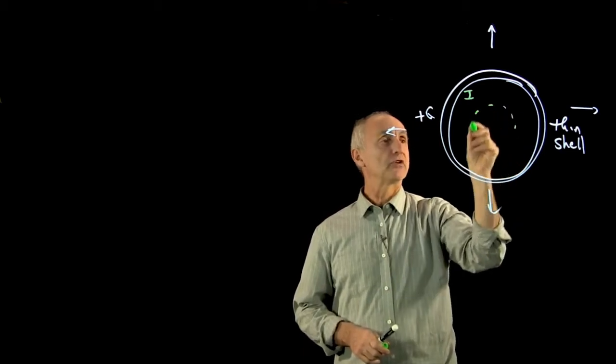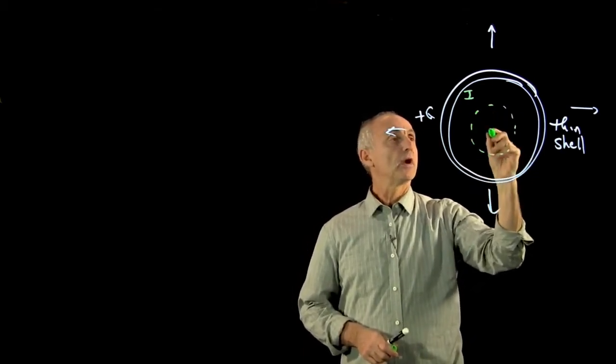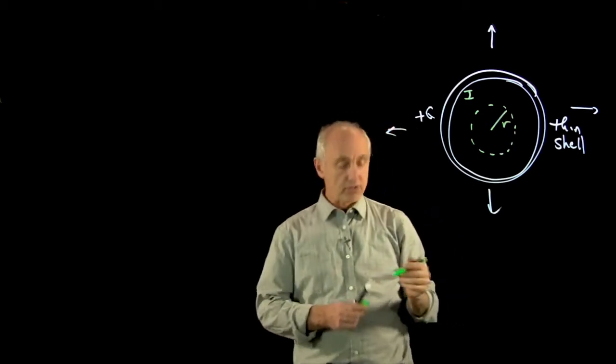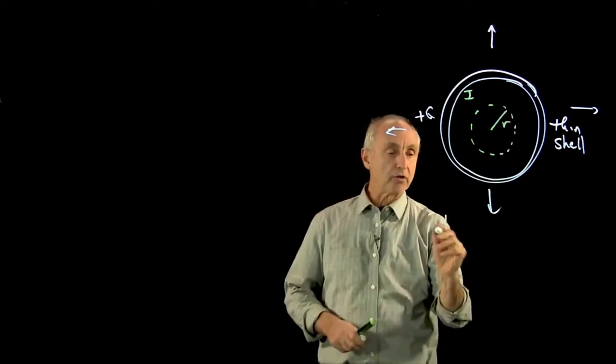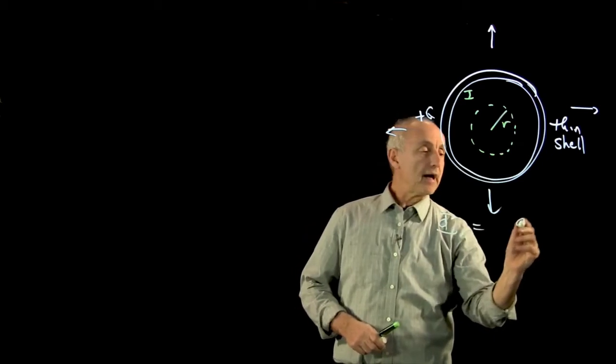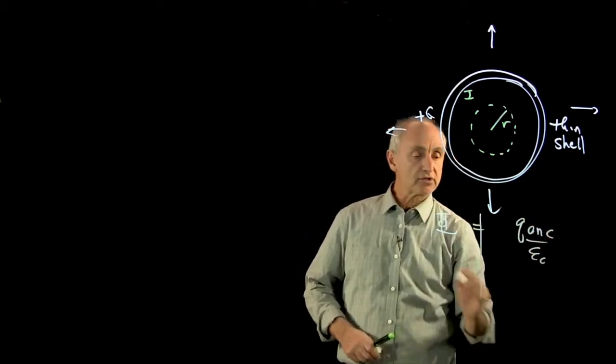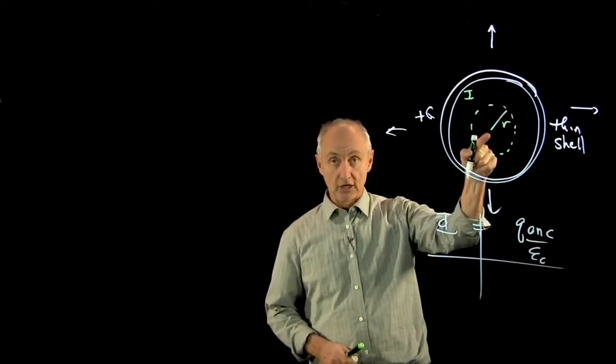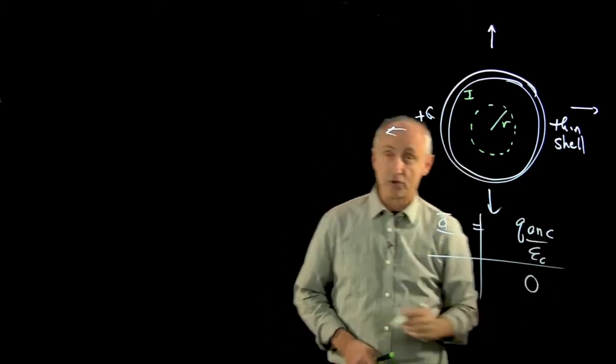So here, let's choose a Gaussian surface where radius r. Now, what we know is when we apply Gauss's law, that the electric flux is equal to the charge enclosed, that there is no charge enclosed in our Gaussian surface.